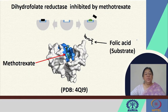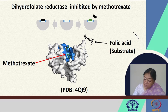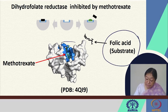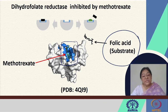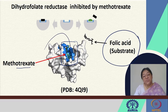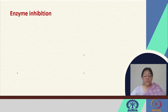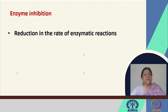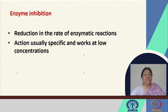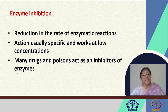For example, we can look at dihydrofolate reductase, which is inhibited by methotrexate. Here, folic acid is the substrate. The active site is marked in blue on the surface of the protein. Methotrexate has bound to the active site, as a result of which the substrate cannot bind. The enzyme inhibition we consider indicates there is a reduction in the rate of enzymatic reactions. The action is specific and can work at low concentrations, which is what would ideally be looked for in an enzyme inhibitor design. Many drugs and poisons actually act as inhibitors of enzymes.